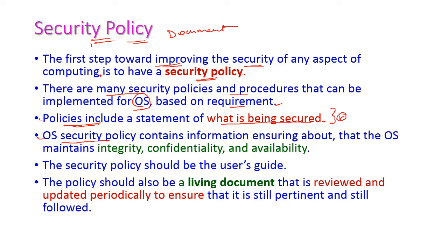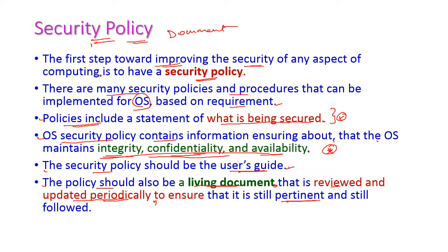The security policy contains information ensuring that the operating system maintains integrity, confidentiality, and availability. If we ensure these things, then we can trust the particular operating system. The security policy should be the user's guide and also a living document — meaning it is reviewed and updated periodically to ensure that it is still relevant and still followed.